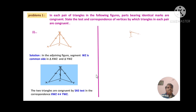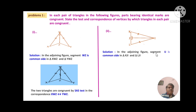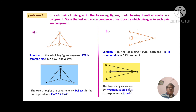For the second problem, segment JI is the common side in triangle KJI and triangle LJI. Marking JI as common, the two triangles are congruent by the hypotenuse-side test, since KJI and LJI are the two hypotenuses which are congruent. The correspondence is KJI to LJI.